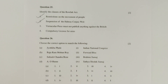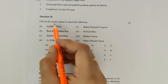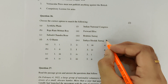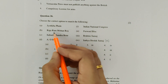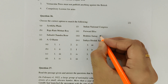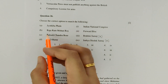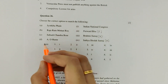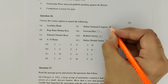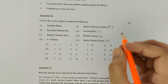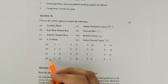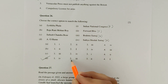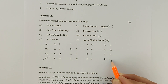Question 26: Match the following. Jyotiba Phule corresponds to Satya Shodhak Samaj. Raja Ram Mohan Roy corresponds to Brahmo Samaj. Netaji Subhash Chandra Bose corresponds to Forward Bloc. And A.O. Hume corresponds to Indian National Congress. So the matching goes: 1→4, 2→3, 3→2, 4→1 — hence option D is correct.